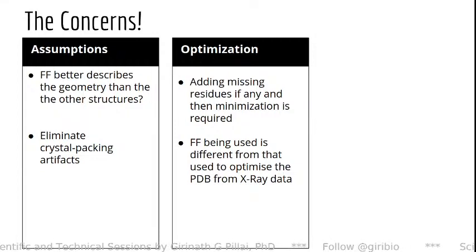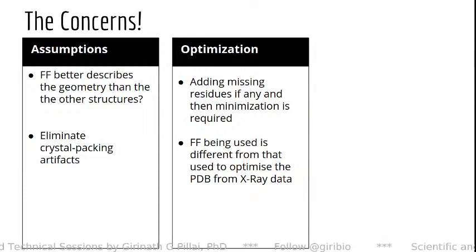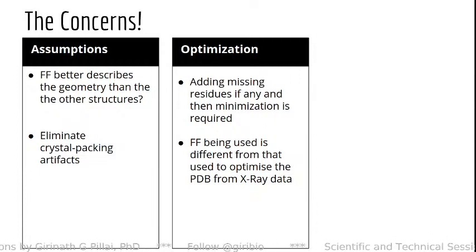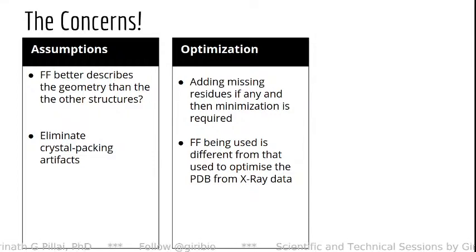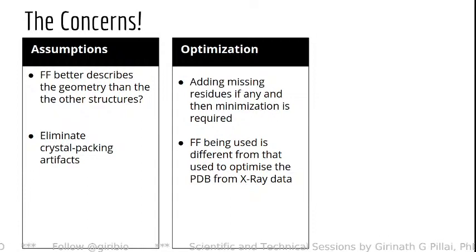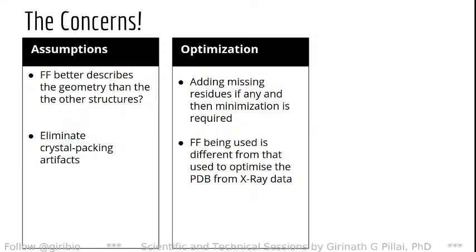NMR is in some ways better than X-ray, though the limitation is that the molecule or crystal should be soluble. In most proteins, X-ray diffraction or cryo-EM are used. When you are adding missing residues to your structure, minimization is required. The force field used may also be different from what is used to optimize a PDB from X-ray data.